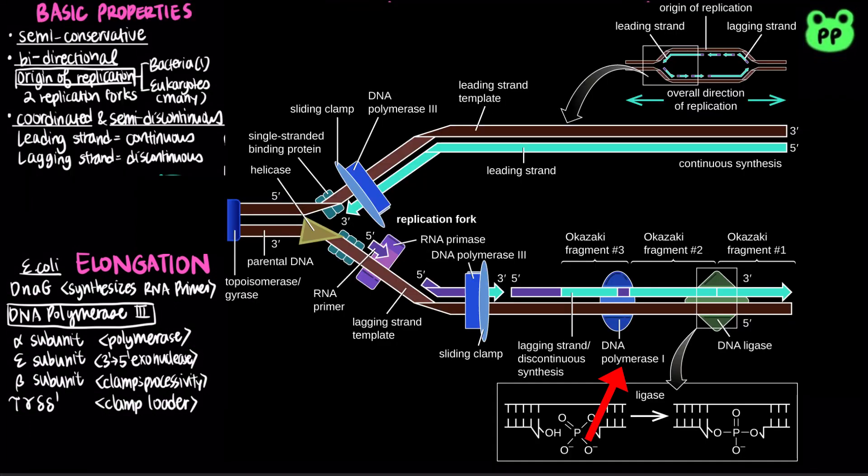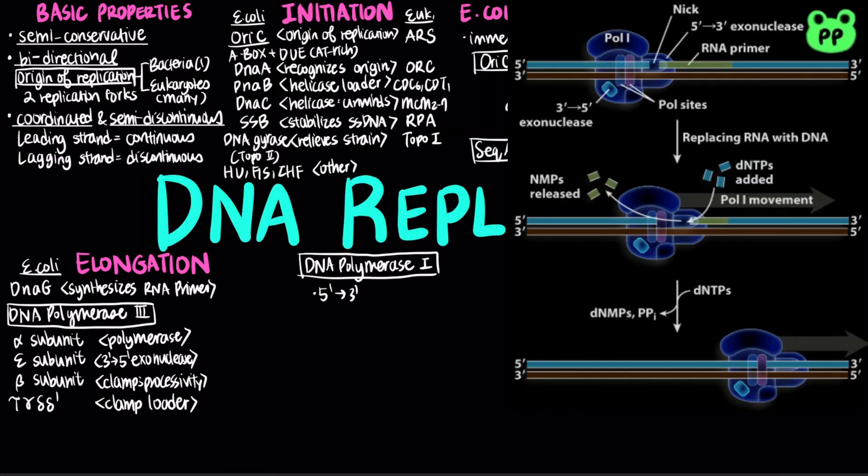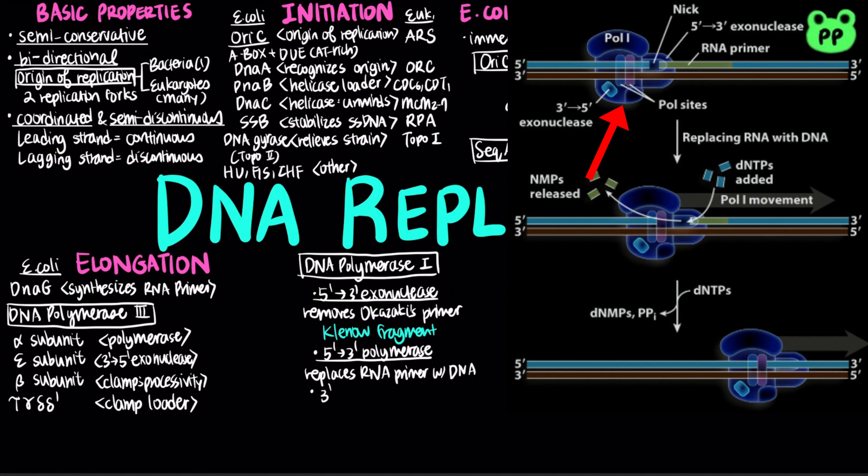In the lagging strand, an additional polymerase known as DNA polymerase 1 functions to replace the RNA primer with DNA. DNA polymerase 1 contains the 5' to 3' exonuclease activity, which functions in removing the RNA primers from Okazaki fragments. The remaining fragment of DNA polymerase 1 is known as the Klenow fragment, which contains 5' to 3' polymerase activity that replaces the RNA removed by the exonuclease with DNA, and 3' to 5' exonuclease activity for proofreading.